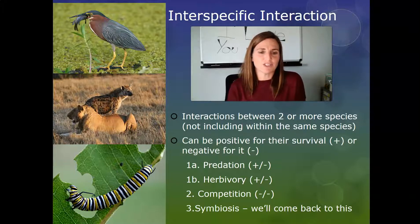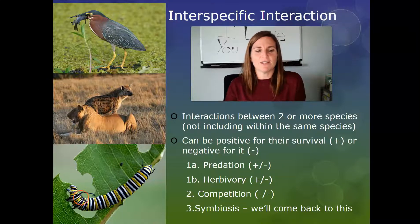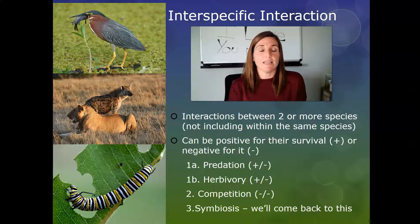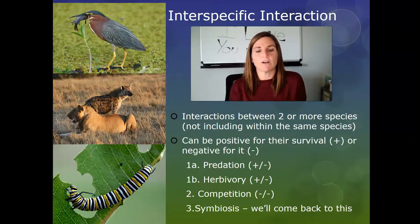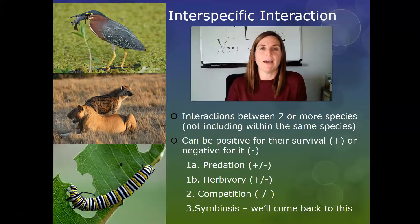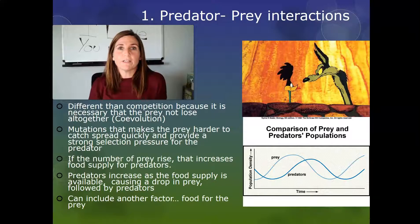Another type of predation is herbivory. Here we have a monarch caterpillar eating a leaf. This is also a win-lose situation — good for the butterfly, but bad for the plant.